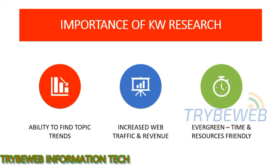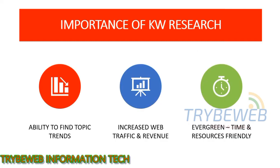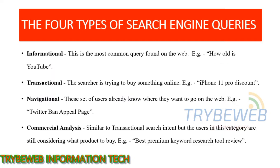There are four types of queries on search engines. The first is informational queries — this is the most common query found on the web. Examples include: How old is YouTube? What footballer has the most goals? How to do keyword research in 2020? This category is broad because 8 out of every 10 people on the web are looking for information.